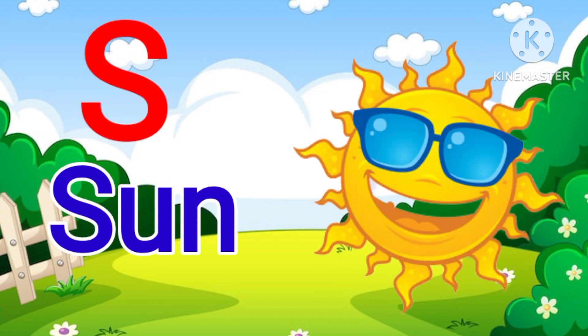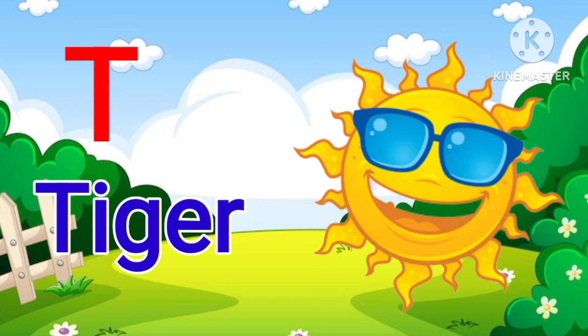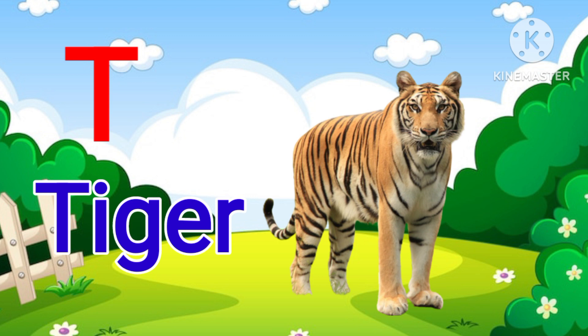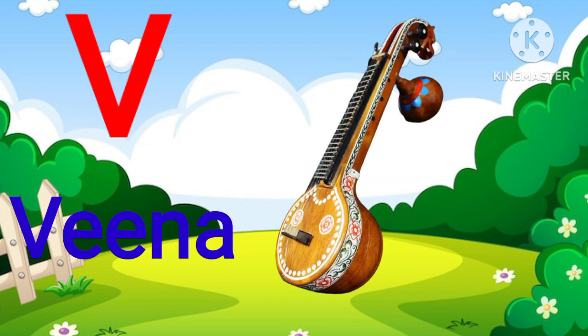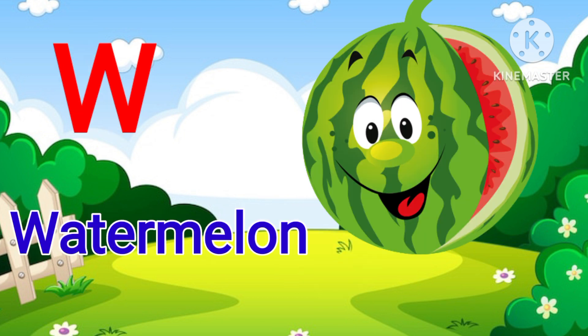T for Tiger, U for Umbrella, V for Winner, W for Watermelon.